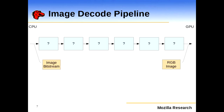The strategy is to move the JPEG data up to the GPU as early as possible. If you consider a generic image decoding pipeline, on one side you have the image bitstreams — the bits that come off the wire — and on the GPU you have the RGB image pixels. The goal is to find the point in the middle, as we go through the decode process, where we reach maximum data parallelism and can do the rest of the decoding taking advantage of the GPU's massive parallelism.